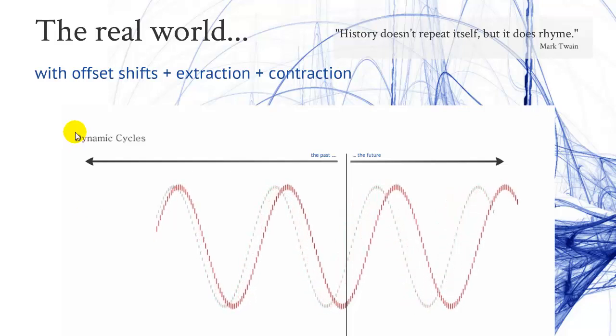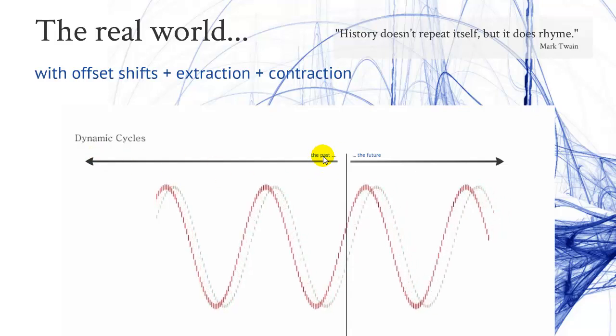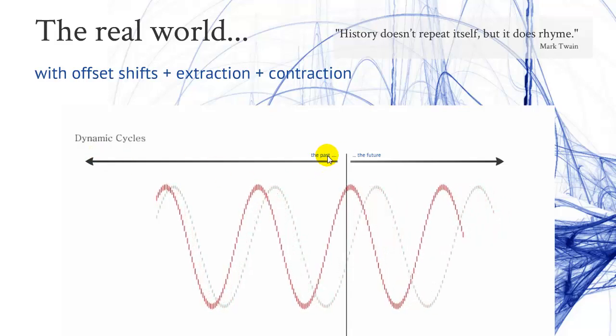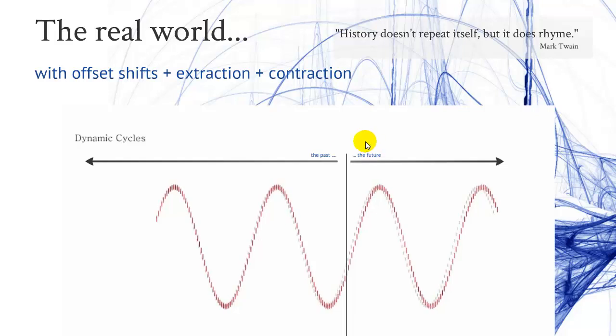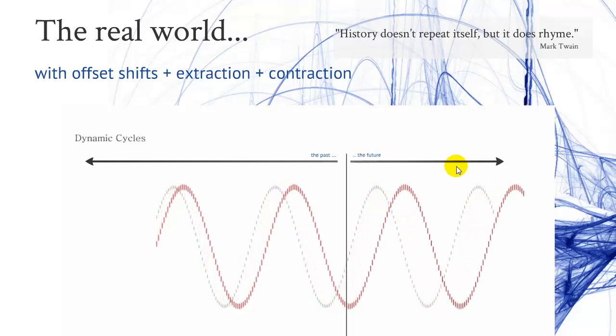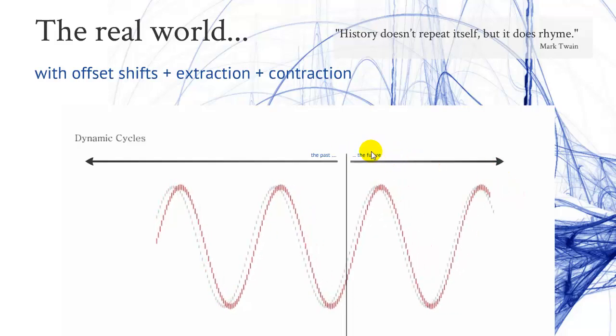We see dynamic cycles here. On the left chart, this shows you the past where the analysis is done. On the right side, you see the future, where you do your projections on the price chart.